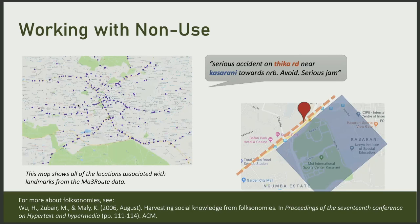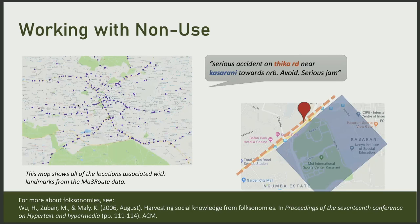GPS is, after all, just one way to describe a place — specifically a point in space that is often used to refer to a bigger place: a street address, a neighborhood, a city, etc.